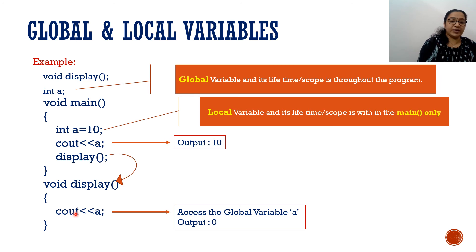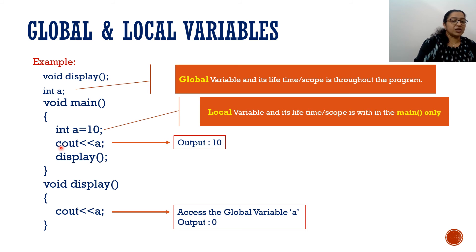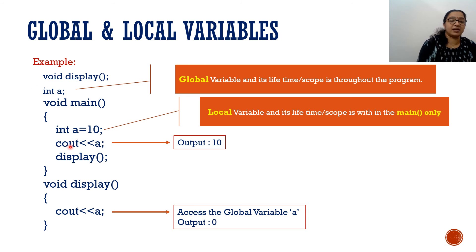After display finishes, execution returns to main and the program ends. So with the same variable name, both global and local can coexist. The local variable is used only within its function, and first preference always goes to the local variable. But what if you want to access the global variable from inside main even when a local variable has the same name — is that possible?